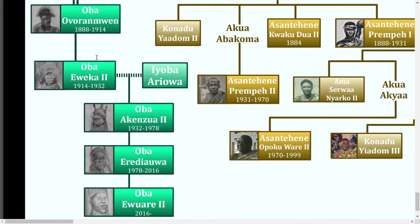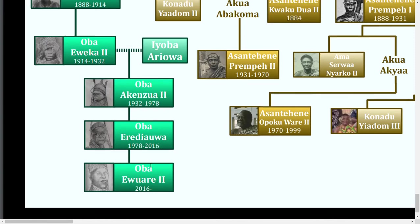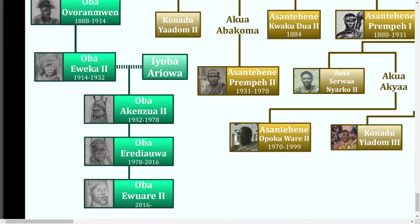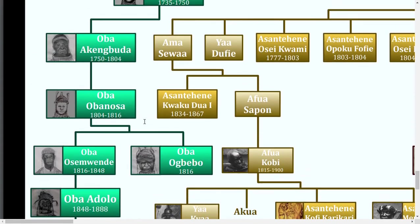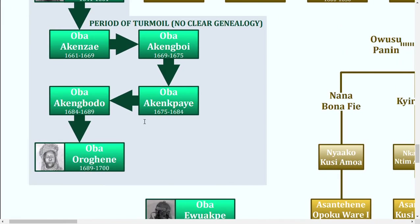The monarchy still actually exists to this day. The current ruler is Oba Ewurare, since 2016. But nowadays it really exists as more of a traditional state, and the actual title of Oba is more of a ceremonial title. And thus ends the Benin Kingdom.